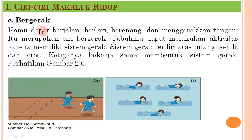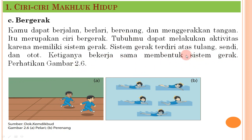Ciri selanjutnya adalah bergerak. Kita dapat berjalan, berlari, berenang, dan menggerakkan tangan. Tubuh kita dapat melakukan aktivitas karena memiliki sistem gerak yang terdiri atas tulang, sendi, dan otot. Ketiganya bekerja sama membentuk sistem gerak. Jika tidak ada salah satunya, misalnya tidak ada tulang, tubuh tidak dapat bergerak.